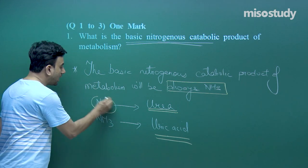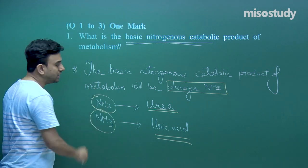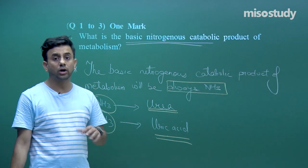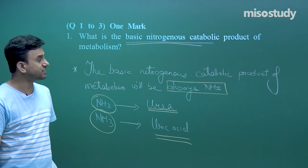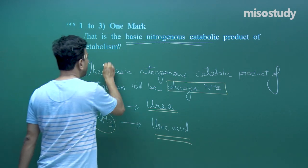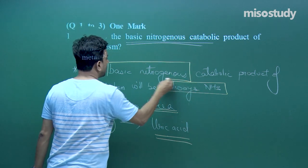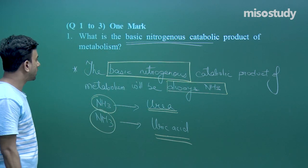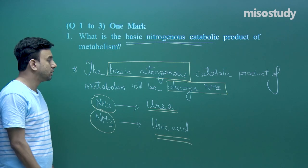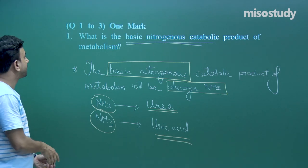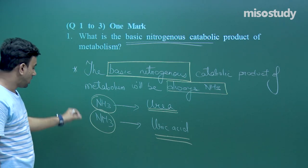Why is ammonia highly soluble in water? Because it is highly soluble, it will require a lot of water for its excretion. The basic nitrogenous catabolic product of metabolism will always be ammonia.